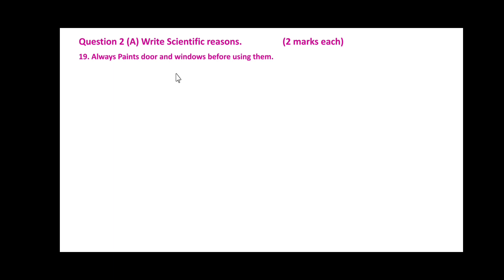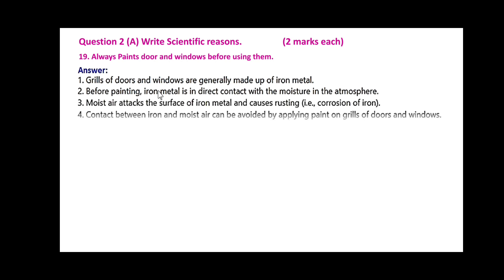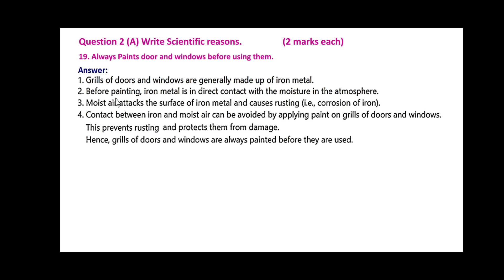Always paint doors and windows before using them. Grills of doors and windows are generally made up of iron metal. Before painting, iron metal is in direct contact with the moisture in the atmosphere. Moist air attacks the surface of iron metal and causes rusting, i.e. the corrosion of iron. Contact between iron and moist air can be avoided by applying paint on grills. This prevents rusting and protects them from damage. Hence, grills of doors and windows are always painted before they are used.